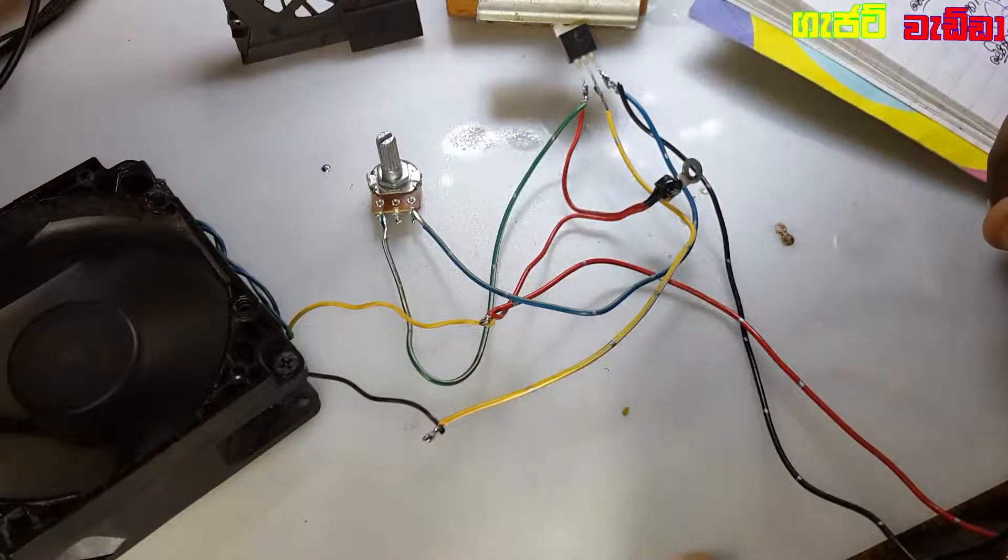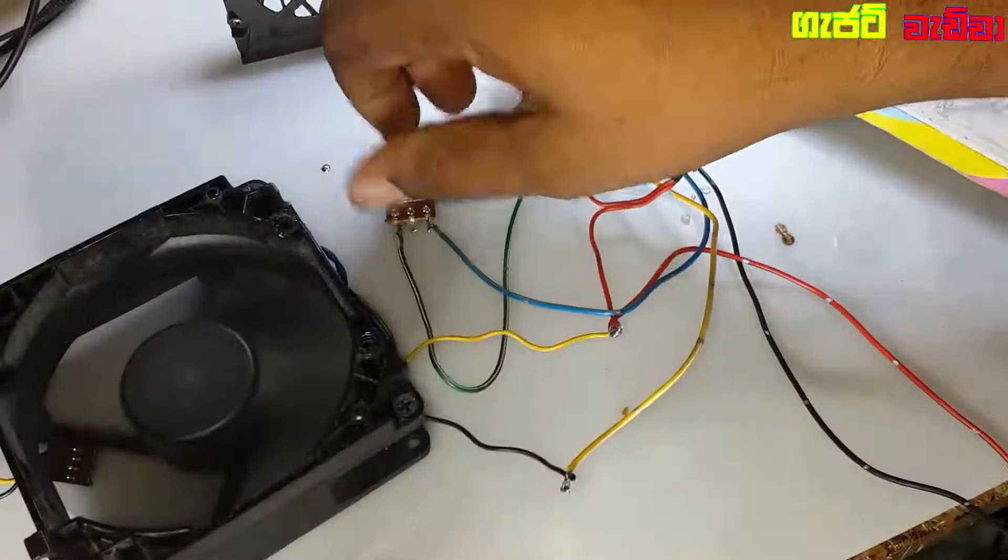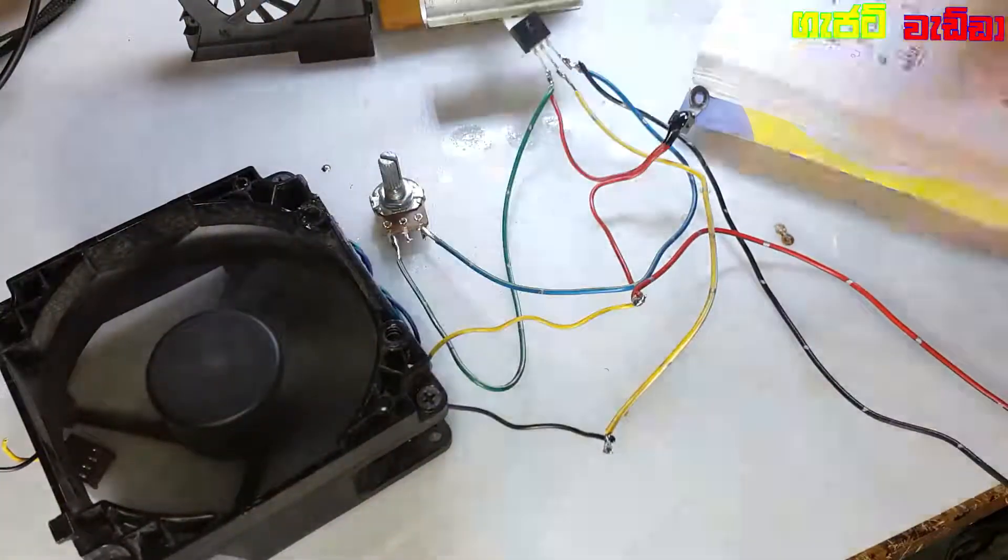Connect the transistor base pin wire. The wire goes to the controller. Your eye controls this, so I can control it with the controller.